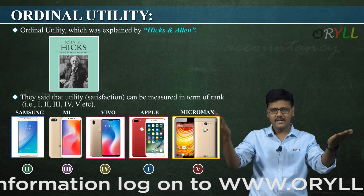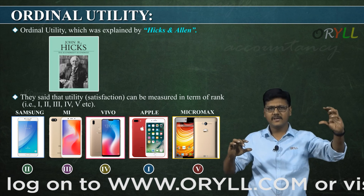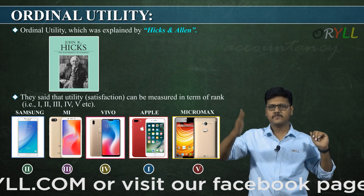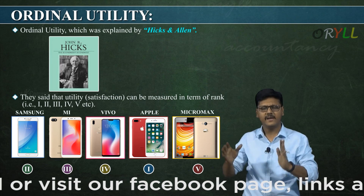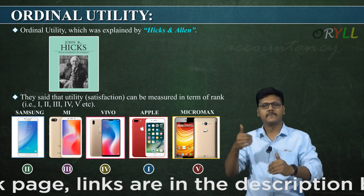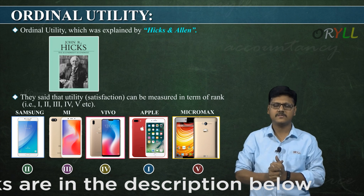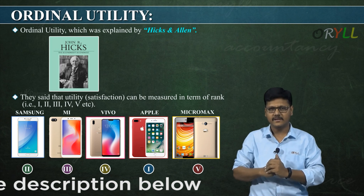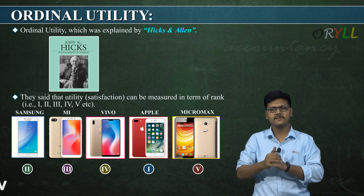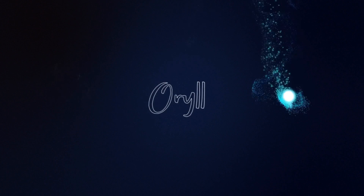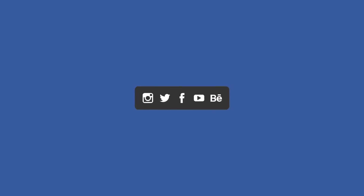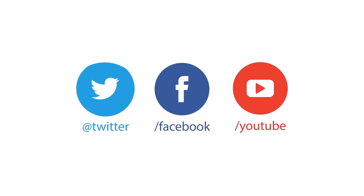The major difference: cardinal utility can be expressed in numbers like 1, 2, 3, 4, whereas ordinal utility can be expressed only in ranks. With ranks, 1st is better than 2nd, 2nd better than 3rd, and so on. On the basis of the ordinal concept, indifference curve analysis was built by Hicks and Allen.